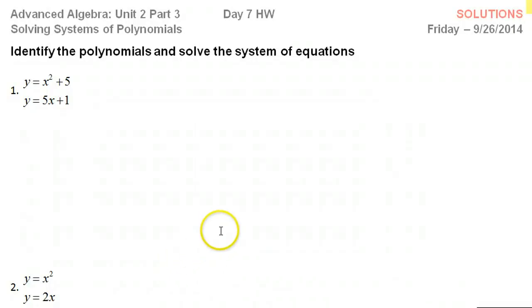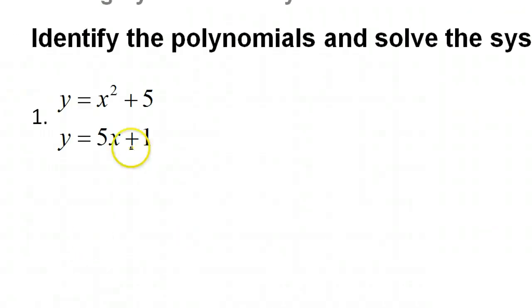Alright, let's take a look at number one. The first thing you should do is identify what type of polynomial you are dealing with. So this first one, we see that it is quadratic. So we know that it is a parabola. The second one is linear. So we know we're talking about a line.